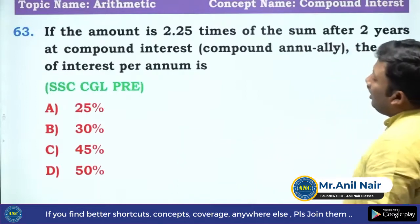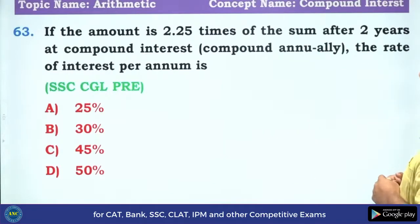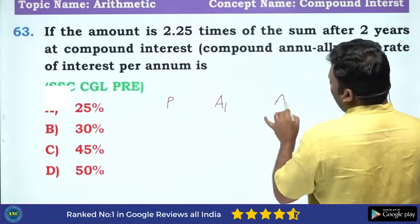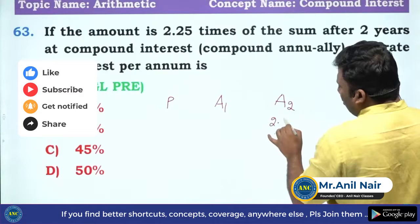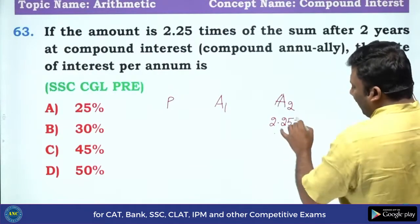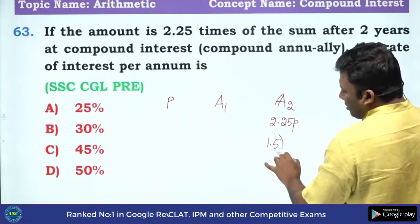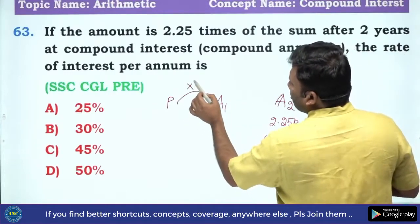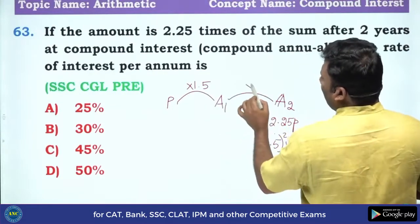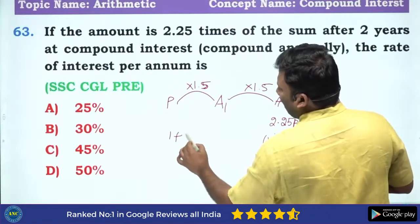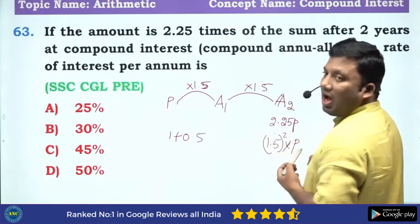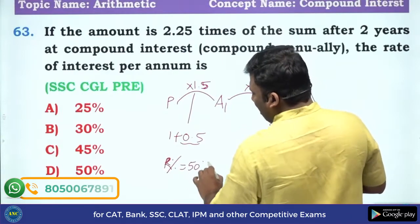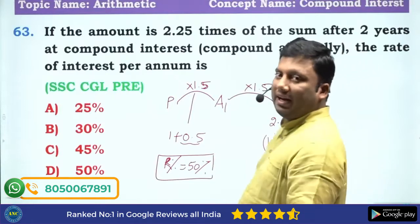Next question — see this. If the amount is 2.25 times of the sum after two years, there is a principal, an amount after the first year, and an amount after the second year. The second-year amount became 2.25 times the principal, so it is P into X squared = 1.5 whole squared into P. The scaling factor between consecutive years is 1.5 each time. So 1.5 = 1 plus R percentage, meaning R percentage = 1/2 = 50%. The rate of interest is 50%.